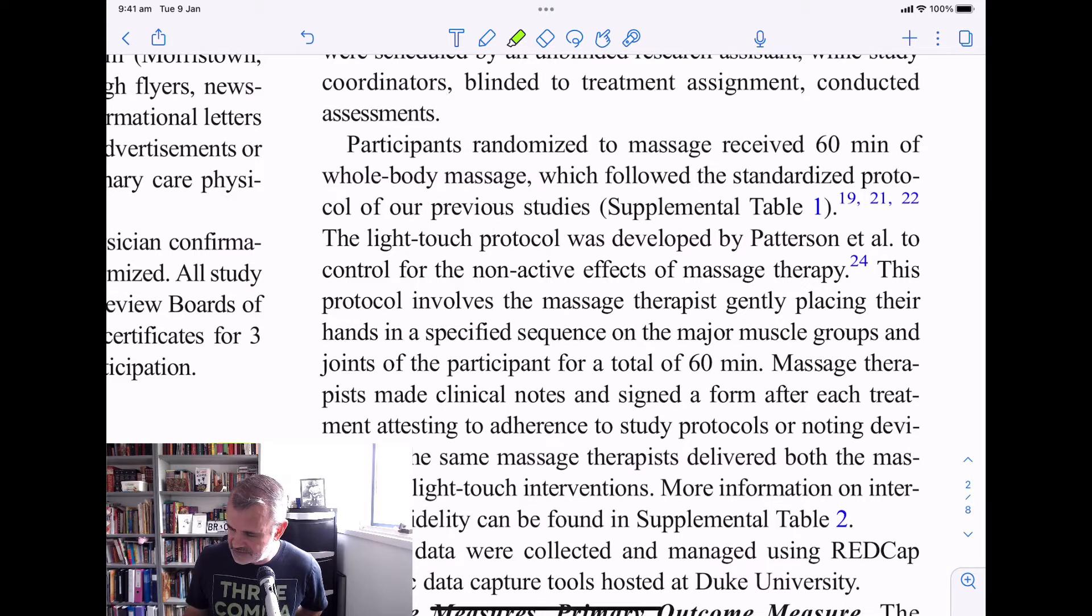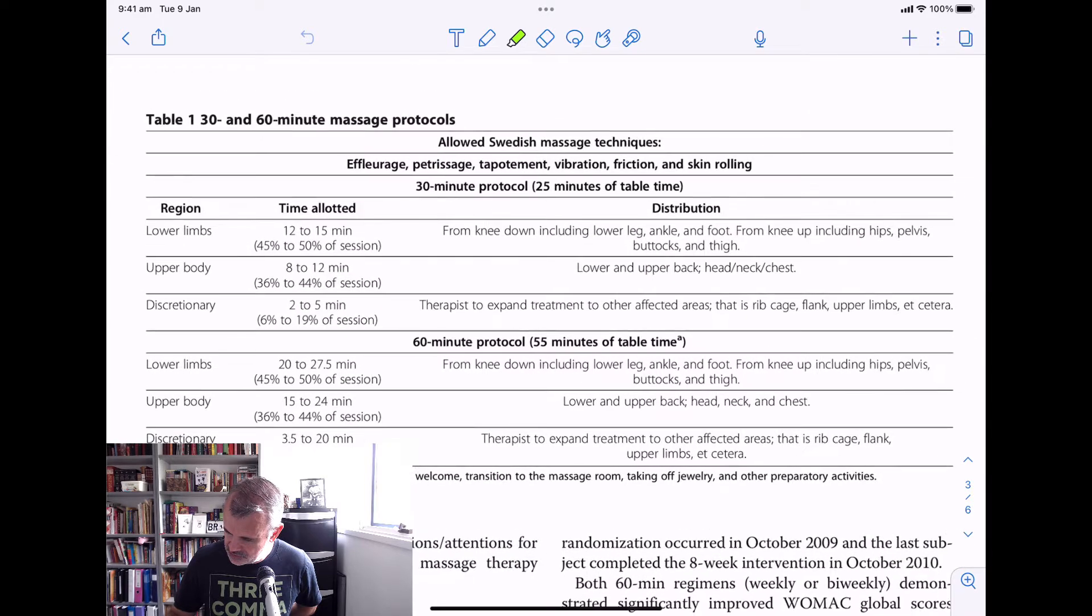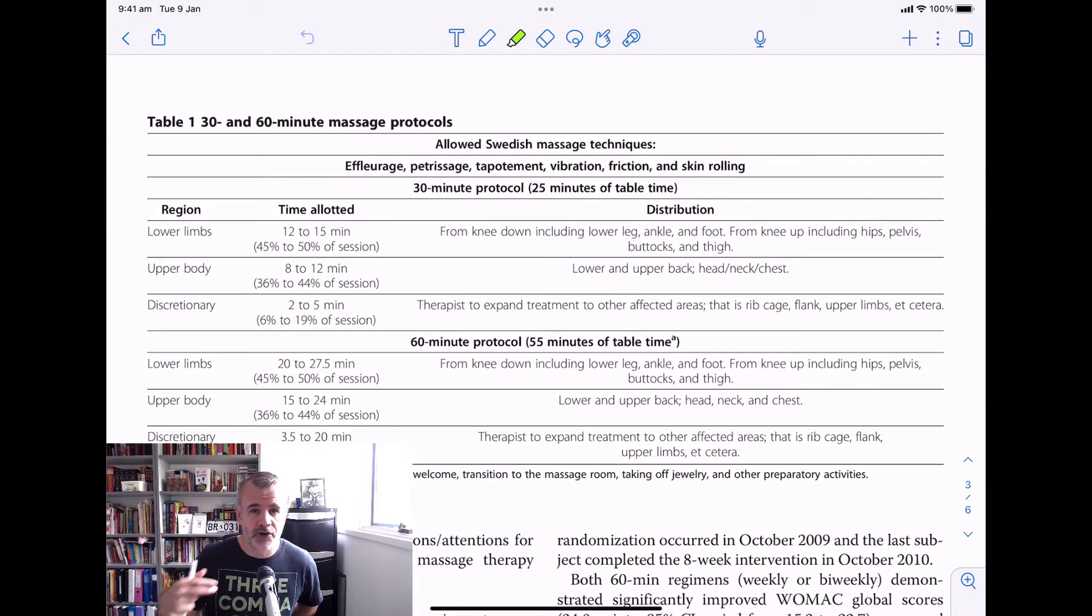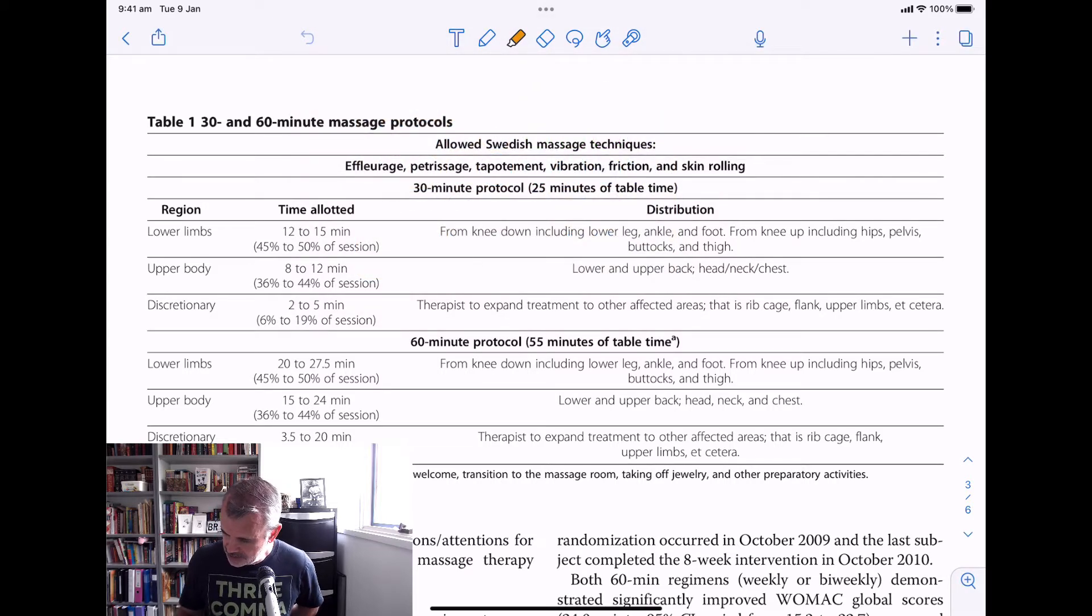Participants randomized to massage receive 60 minutes of whole-body massage, which follows a standardized protocol of our previous studies. And I'll just go back to those previous studies. This is one they did in 2012, and they tried to make a protocol for massage. So this basically explains the massage techniques they use for knee osteoarthritis in this study. So they had two. They had a 30-minute protocol and a 60-minute protocol. 30-minute protocol was basically whole-body Swedish massage. If you don't know what Swedish massage is, it's just general massage strokes all over the body.